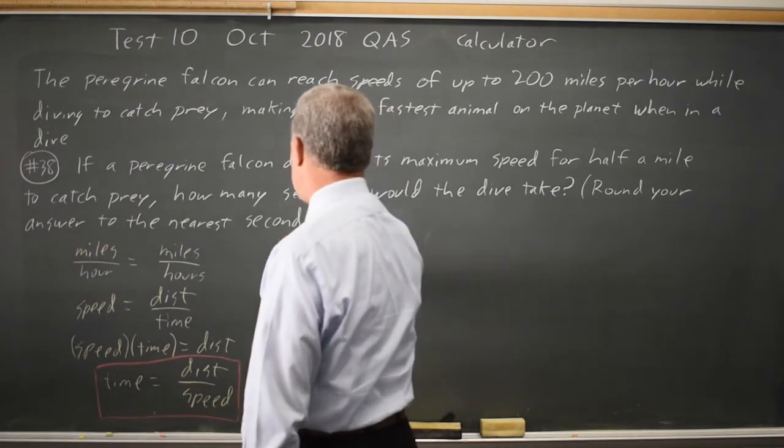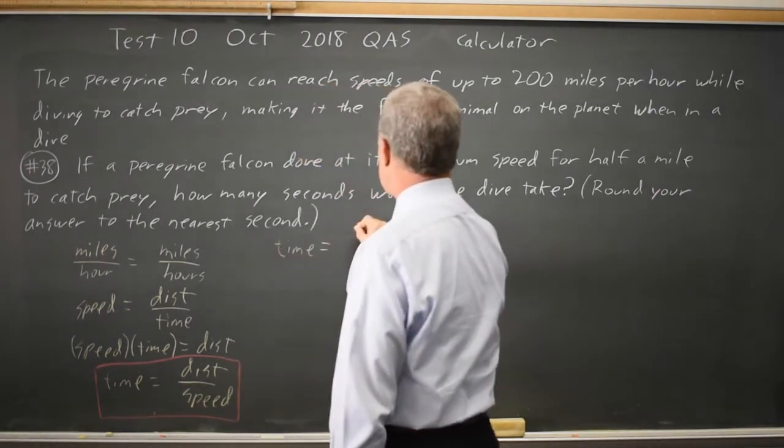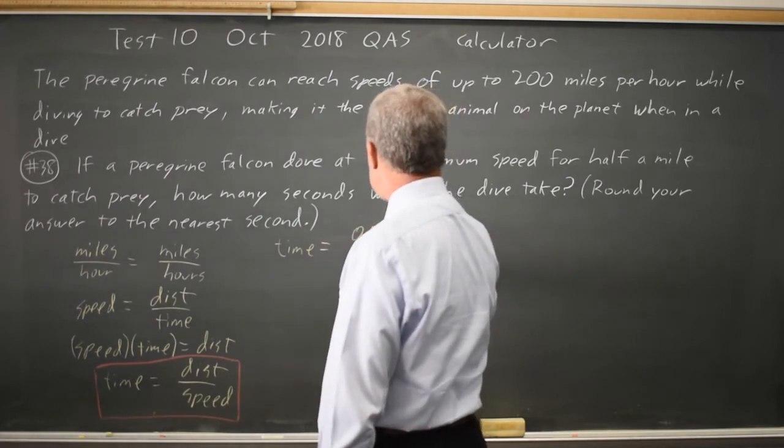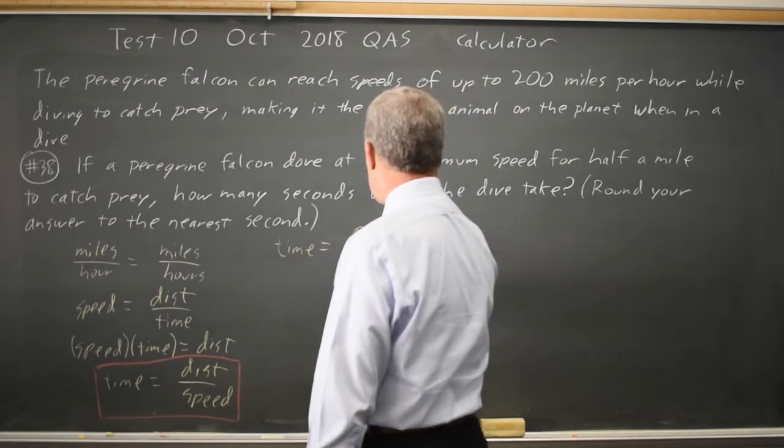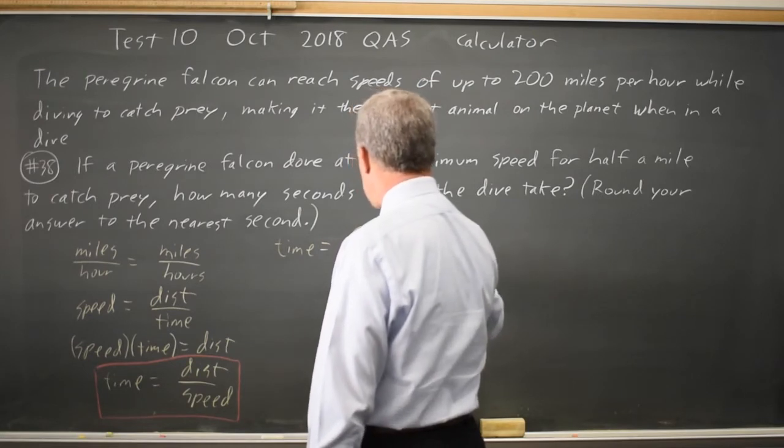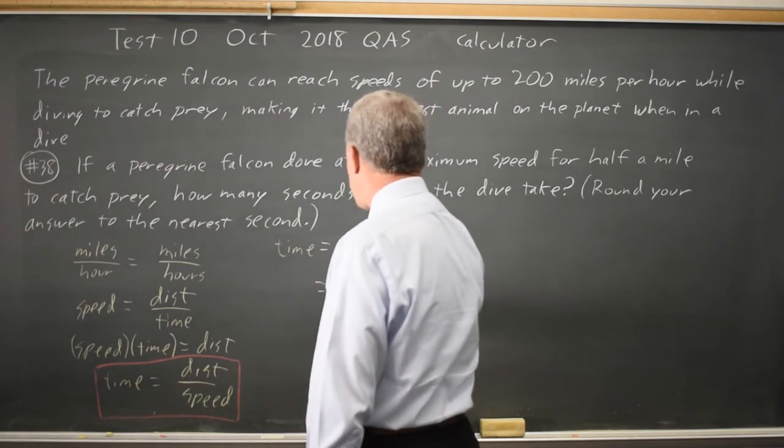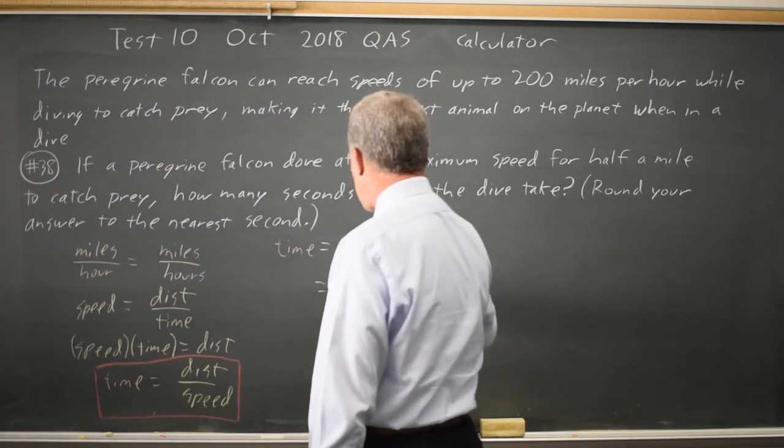So my time is my distance, which is 0.5 miles, divided by my speed, which is 200 miles per hour. And that gives me 1 over 400 hours.